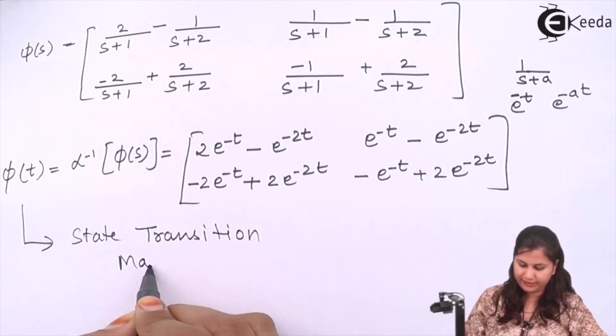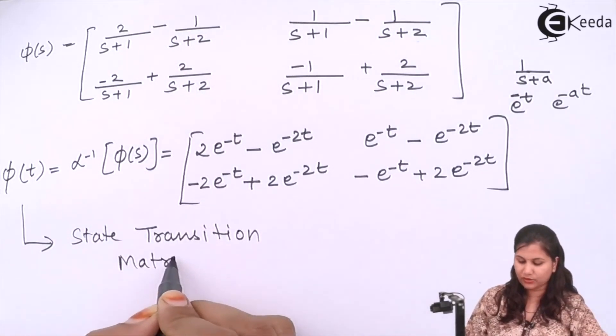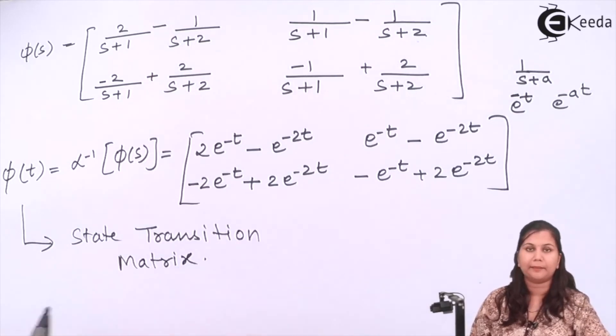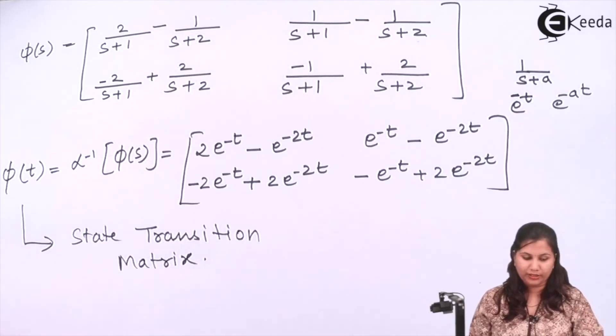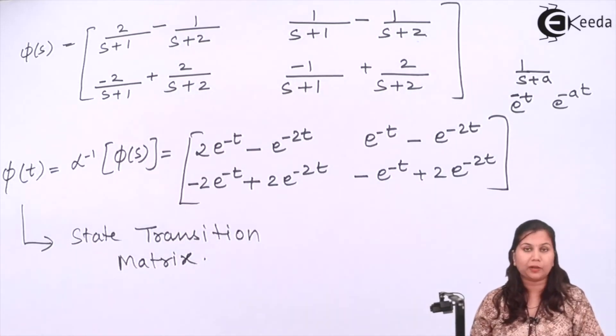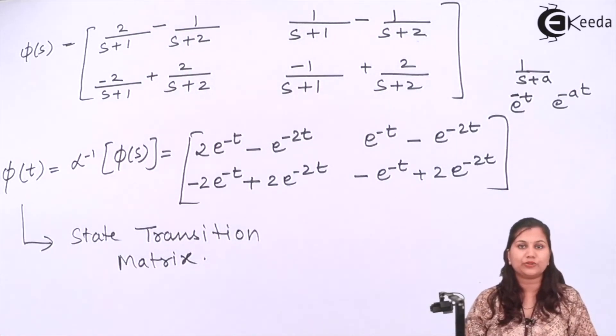So this is our state transition matrix, also called the resolvent matrix. I hope this problem is clear to you. Thank you.